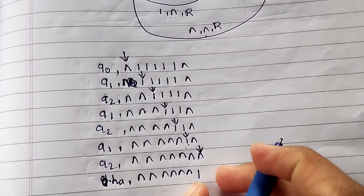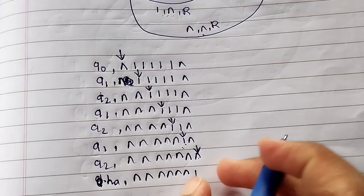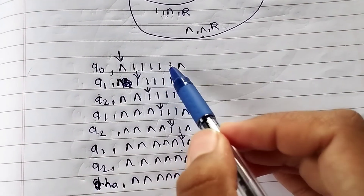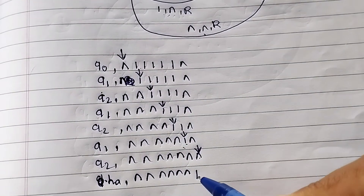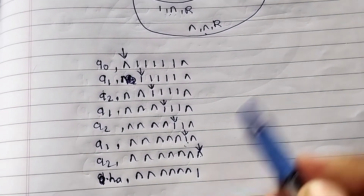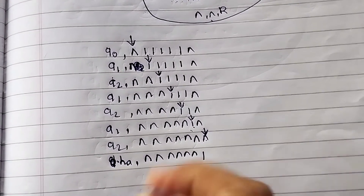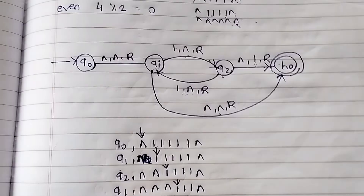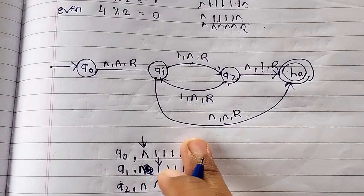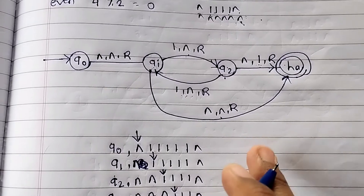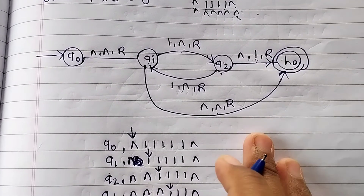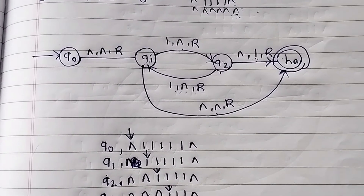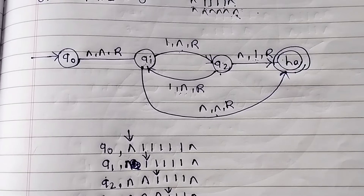Since 5 is an odd number, we get remainder 1 as output, which is correct. We can say this string is accepted. In this way we draw the Turing machine for n mod 2. If you have any doubt or query about this Turing machine, let me know in the comment box. Thank you.